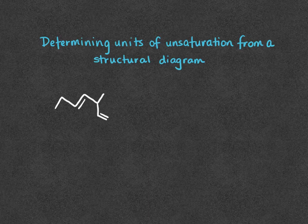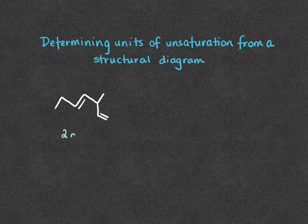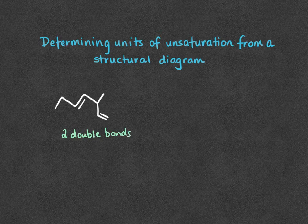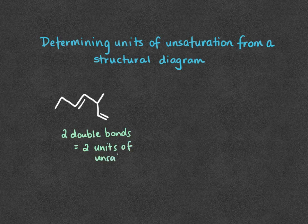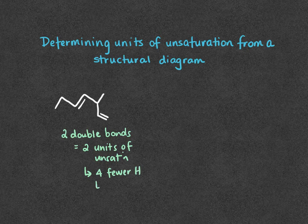In our first structure, we have a straight chain hydrocarbon. This is an aliphatic molecule, however, now we have two double bonds. Because we have two double bonds, each one is one unit of unsaturation. So that's two units of unsaturation total, which really means four fewer hydrogens than the alkane.